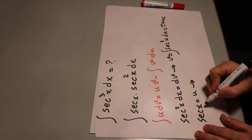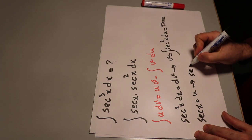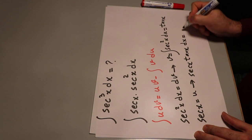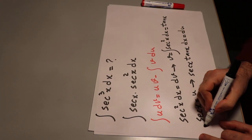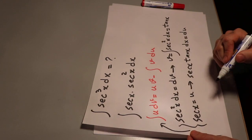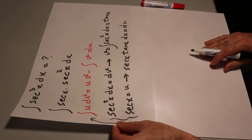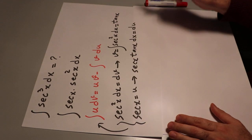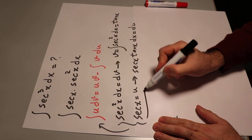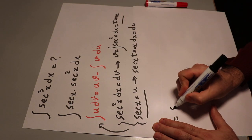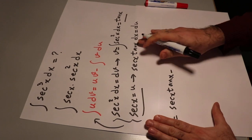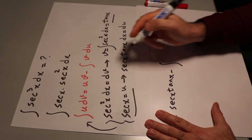Therefore, taking the derivative of each side of this equation, secant x tangent x dx will be equal to du. So now you can substitute this expression into the integral, and you can write it as uv minus the integral of v du — that is secant x tangent x minus the integral of v du.